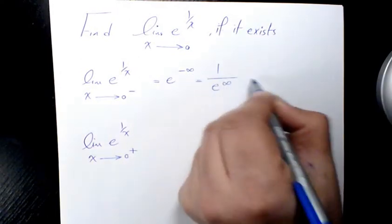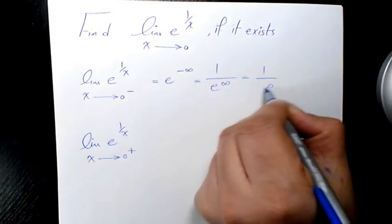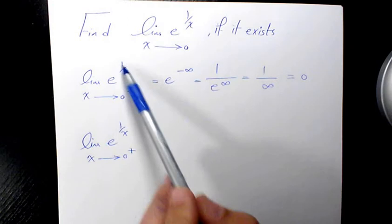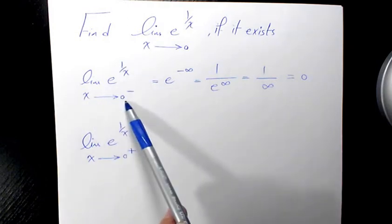be 1/(e^∞), that's going to be 1/∞, and that's going to be 0. So whenever we have e^(1/x) and x is approaching 0 from the negative